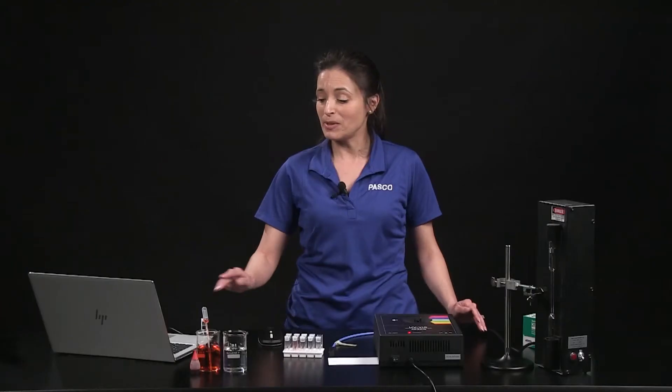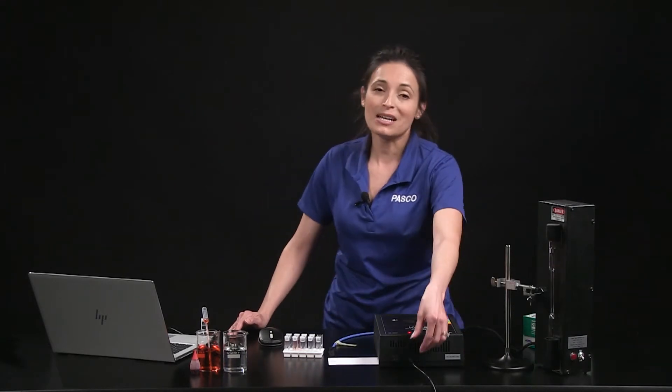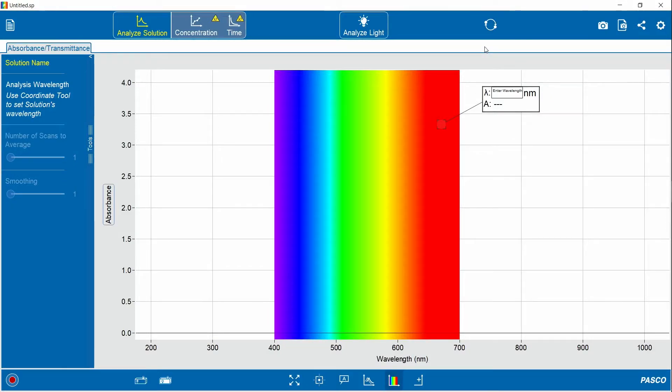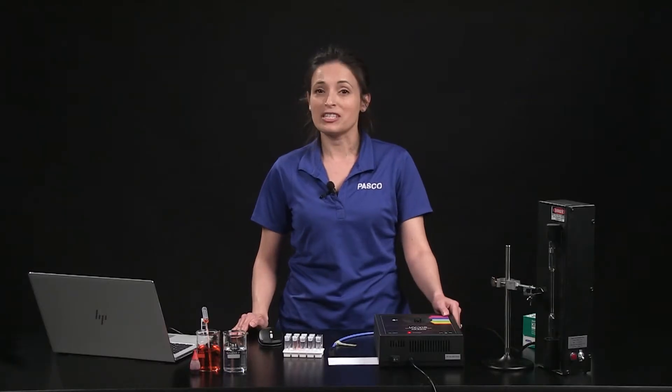The spectrometer connects via USB to your Windows or Mac computer. It comes with an AC adapter. You will need version 2.3 or newer of the free spectrometry app to use with the UV-VIS spectrometer.